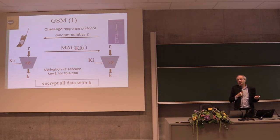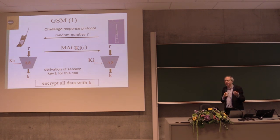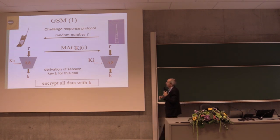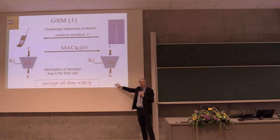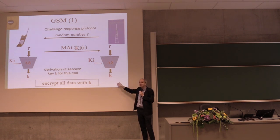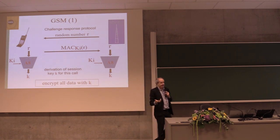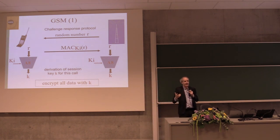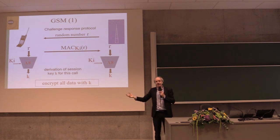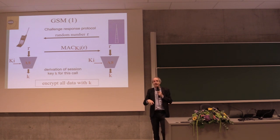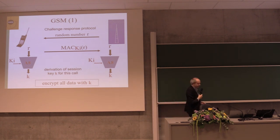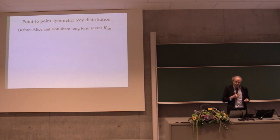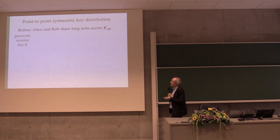It's easy to break this system because in GSM the network is not authenticated. The network can just send a command saying 'today we don't do encryption,' and your phone will stop encrypting. Your phone will also nicely send your IMSI if asked. So 2G is very insecure and has many flaws. Most of those have been fixed in 3G and 4G. The problem is: if you jam 3G and 4G, your phone falls back to 2G and you have all the security flaws of 2G.